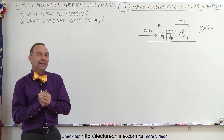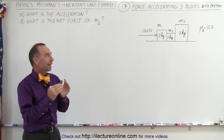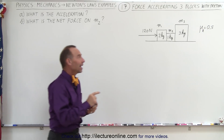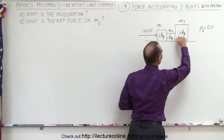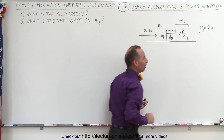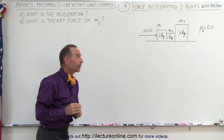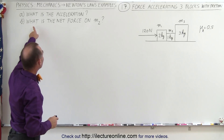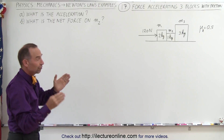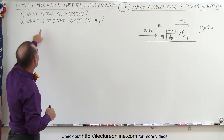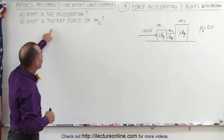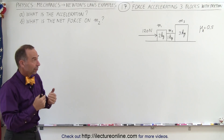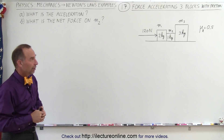Welcome to ElectronLine. We're going to take a look at the same problem we did before, but this time there's friction between the blocks and the floor. That makes things a little more complicated. We're going to first find the acceleration of the whole system and then find the net force on the middle block M2. How does that work now that there's friction involved?